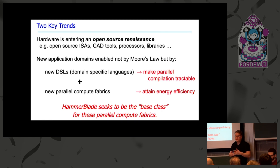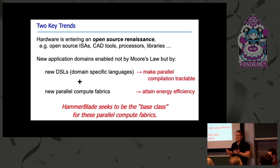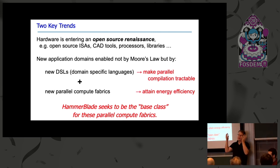At the same time, we have all of these new application domains that are enabled essentially by Moore's law winding down. The key technologies for enabling these domains are the development of new DSLs — domain specific languages — that help us make the specification of parallel compilation feasible, and also the availability of new parallel compute fabrics.